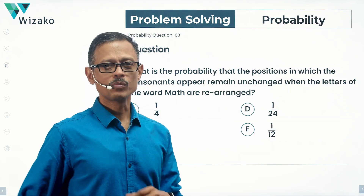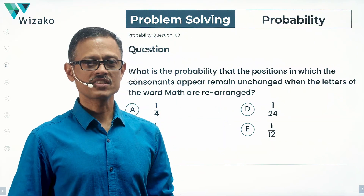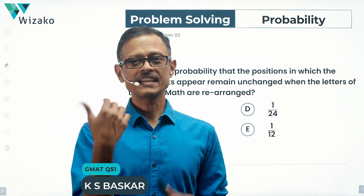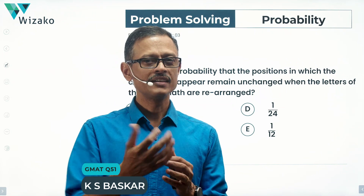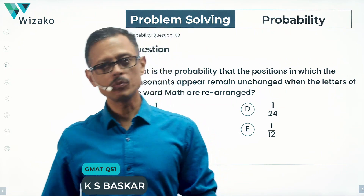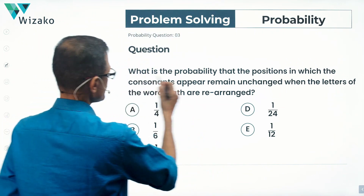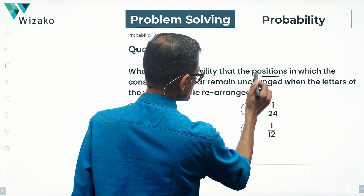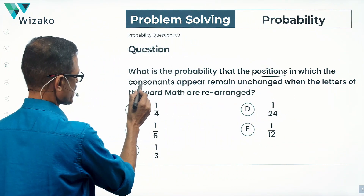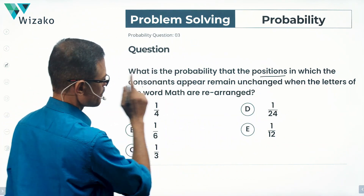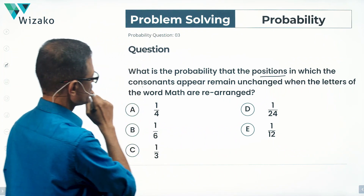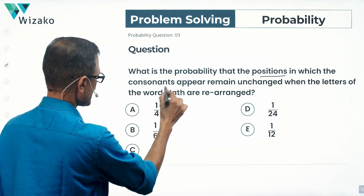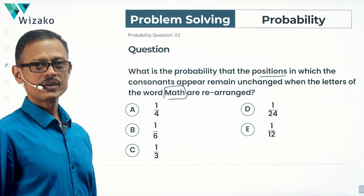Hi everyone, this is a GMAT problem-solving practice question in probability. The concept tested is rearranging letters of a word framed as a probability question. What is the probability that the positions in which the consonants appear remain unchanged when the letters of the word MATH are rearranged?